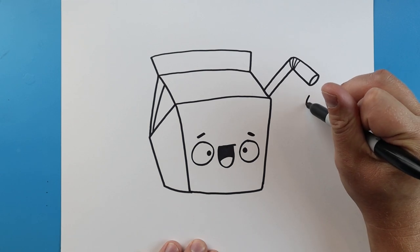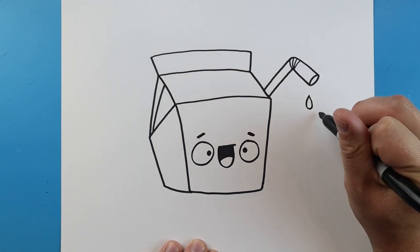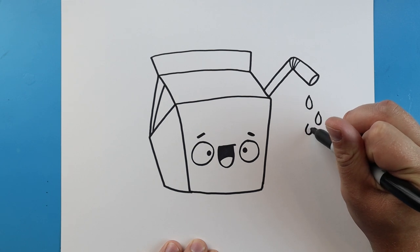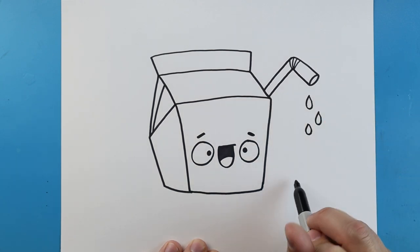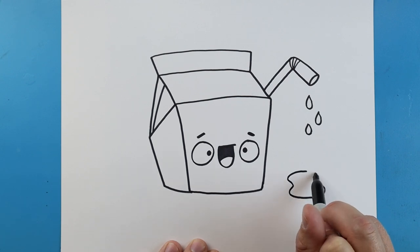Now down here, I'm going to add some little tear drops to make it look like there's some milk dropping out of the straw. We'll put a little puddle over here by making a little wavy line.